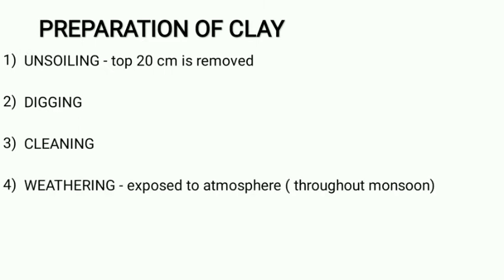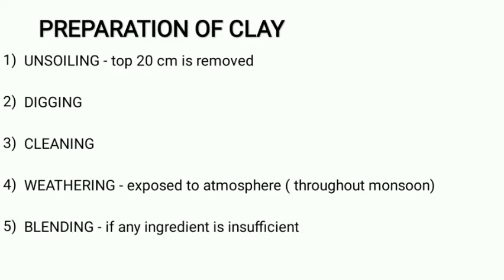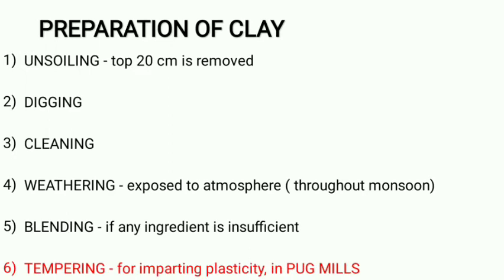Next is weathering. In this, the soil is exposed to the atmosphere for a few weeks or months to carry out its softening. Next is blending. If any ingredient is in deficiency, we will add that ingredient to the weathered soil — that is called blending. Next is tempering. In order to make the bricks, we have to change this weathered clay to the required plasticity. This process is called tempering, and it is done in pug mills.